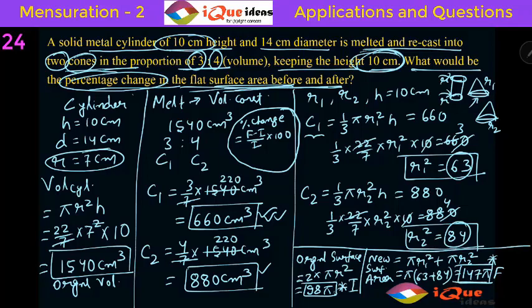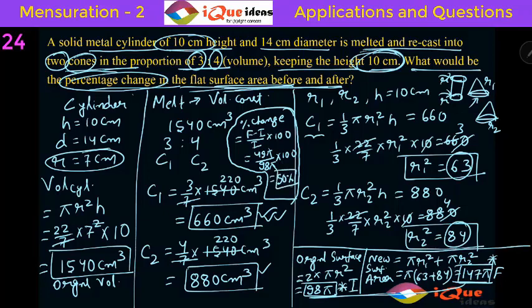Final is 147 Pi, initial is 98 Pi. So 147 minus 98 is 49 Pi, divided by 98 Pi into 100. Pi and Pi cancel. 49 by 98 is 1 by 2. One by 2 into 100 is 50 percent. So the answer is 50 percent. That is why this was a very tricky question — before it was a cylinder with two circular surfaces, and after it was two different cones, so you have to be careful.